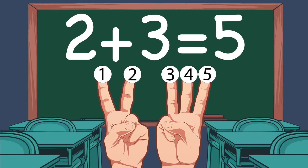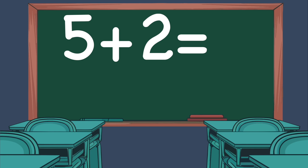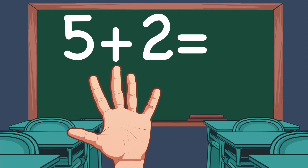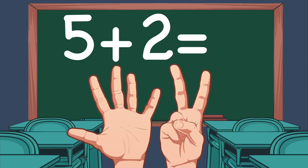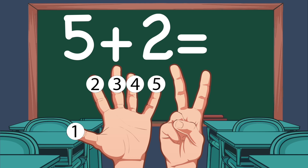Let's do another one: 5 plus 2. On our left hand, we show 5 fingers. On our right hand, we show 2 fingers. Now let's count the total number of fingers: 1, 2, 3, 4, 5, 6, 7. So 5 plus 2 equals 7.